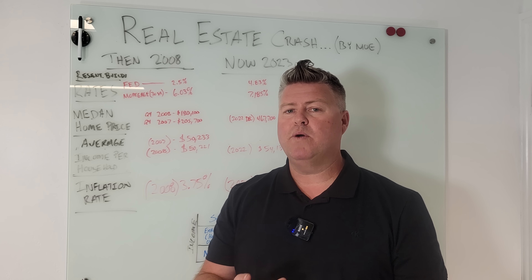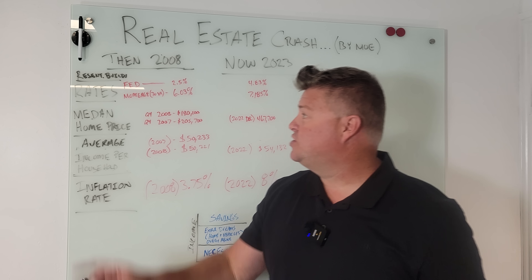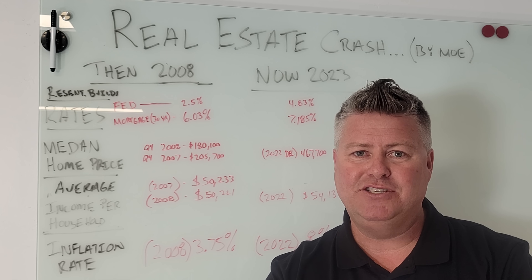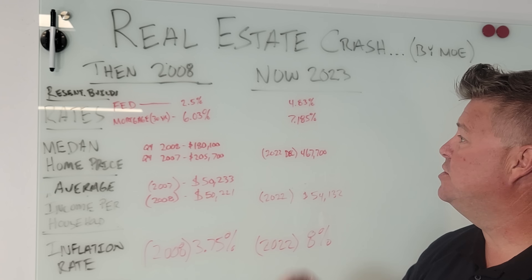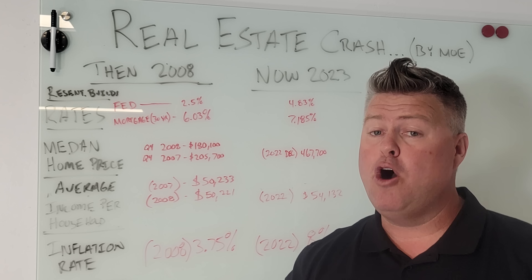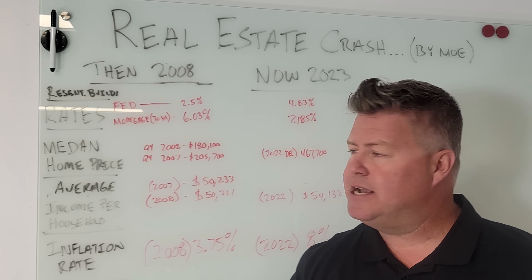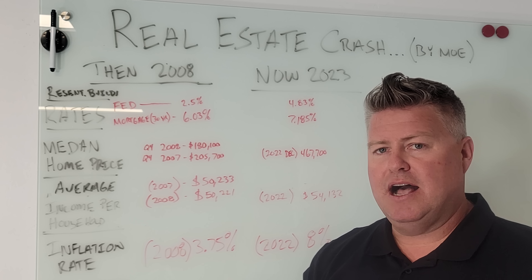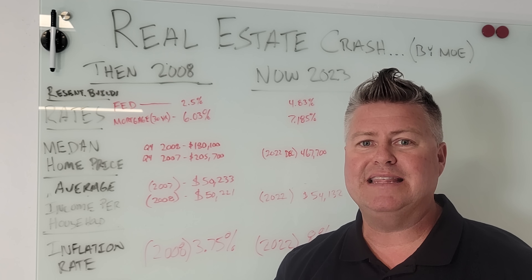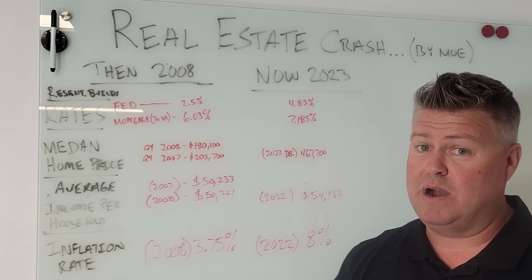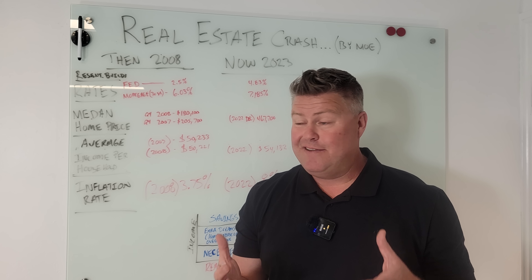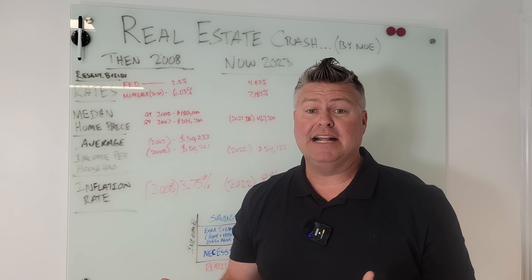Let's compare what was going on in 2008 compared to now. Rates — let's talk about the fed funds rate: two and a half percent in the year 2008, compared to currently 4.83%, which is almost a doubling. The 30-year mortgage average rate was a little over 6% in 2008; right now we're sitting at 7.1%. Historically, that's not too bad.